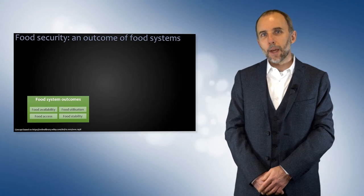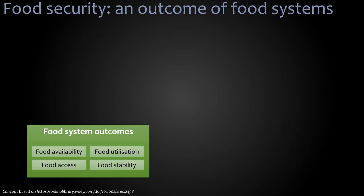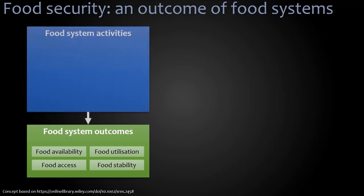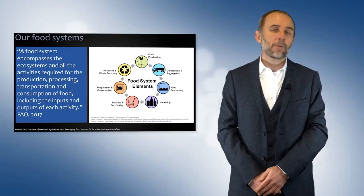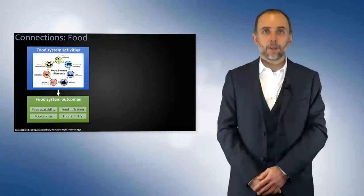Our food security depends on our food systems. In order to have the outcomes of available, utilisable, and accessible food, we need to have food system activities that enable that. A food system has multiple elements, from the production of food to its distribution, its processing, its marketing, its sales, our consumption of it, and sometimes our recycling of certain parts of the food that we consume. The food system encompasses all of that and all of the activities that link them together, and these food systems lead to our food system outcomes.